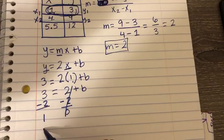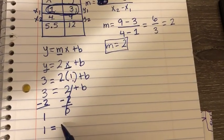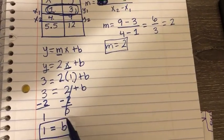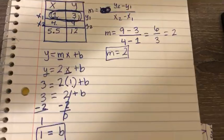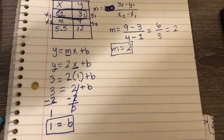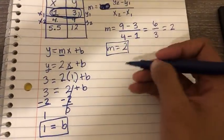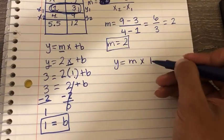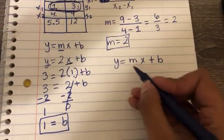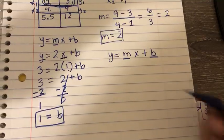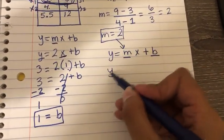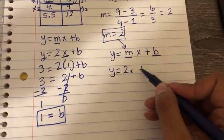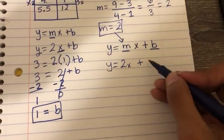Now I've got 1 equals b. So the y-intercept of this table is 1. In my slope-intercept form equation, y equals mx plus b, I can now replace m and b, so I've got m, which is 2. So y equals 2x plus b, which is 1. That's my final equation.